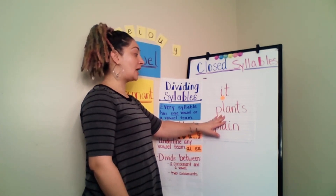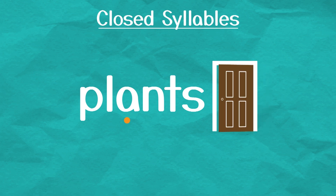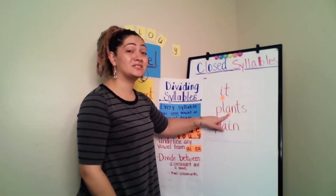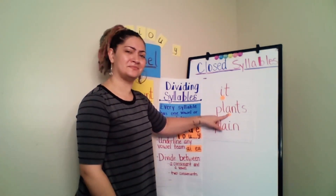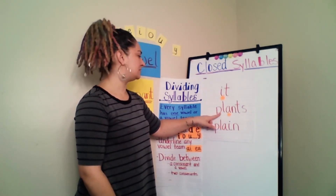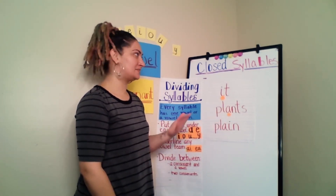Here's another word. I notice one vowel again, which means this word has one syllable, and all these letters are together in this syllable. I noticed that there is one consonant — or even three consonants — after this vowel, making it again a closed syllable. That A is going to have a short A sound. Let's figure out this word — plants. Yeah, I see plants outside all the time.